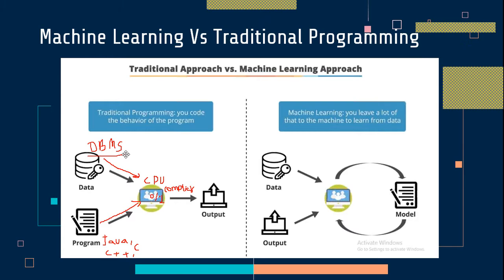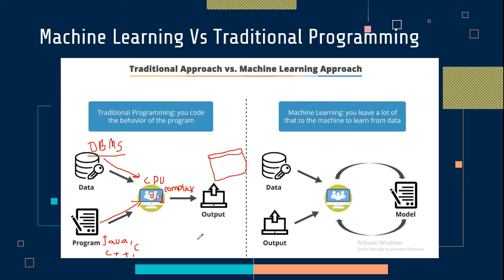These programming languages — Java, C++, and C — combined with the DBMS, provide the output on the screen. This is called the normal execution of traditional programming.